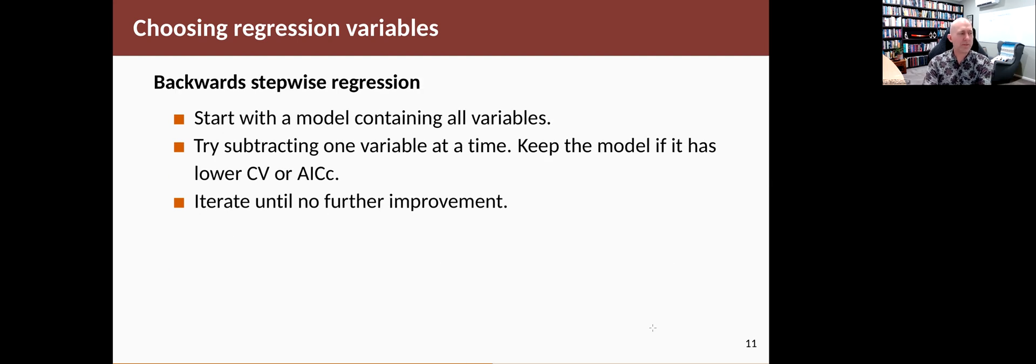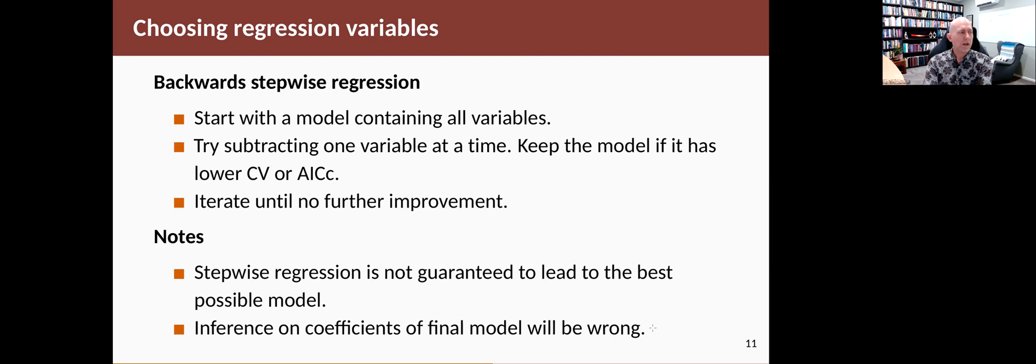So one strategy that people use is called backwards stepwise regression, where you start with the model containing all of the variables, and you keep removing one variable at a time and keeping the model if it has a lower CV statistic or a lower AICc statistic, and you stop if you can no longer improve. And that, while it's not guaranteed to give you the best model, will often lead to a good model.